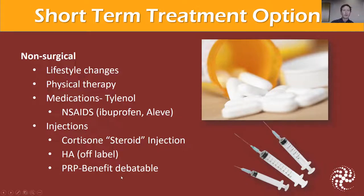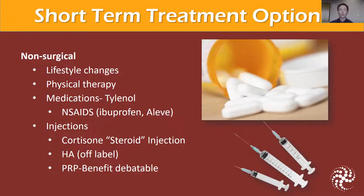We also talk about hyaluronic acid injections. This is something we use in the knee for treatment of mild arthritis symptoms. It does get used for the shoulder — it's not often approved for treatment of shoulder degeneration or wear and tear — but it can be effective. So it's something you need to speak with your doctor about trialing. It's a nice option outside of using cortisone injections and surgery.